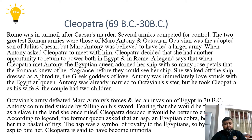Antony was immediately struck by the Egyptian queen. Mark Antony was the grandnephew of Caesar. However, Antony fell in love with Cleopatra. Antony, before meeting Cleopatra, had already married Octavian's sister. But when he saw Cleopatra, he forgot his wife and his two children. So Octavian became very annoyed with Antony, and in a battle, Octavian's army defeated Mark Antony's forces and led an invasion of Egypt.